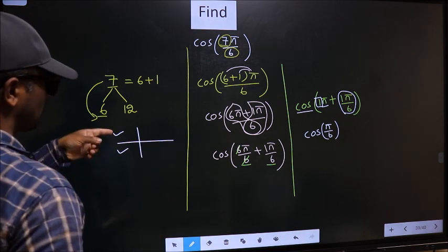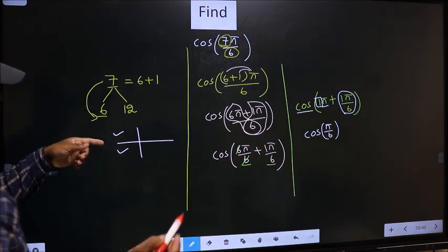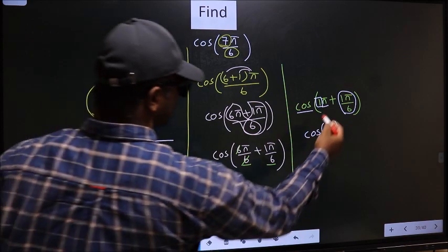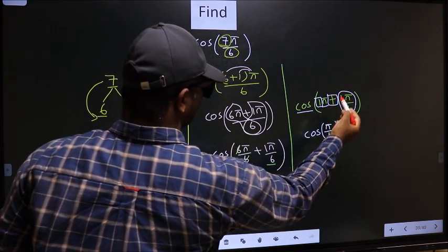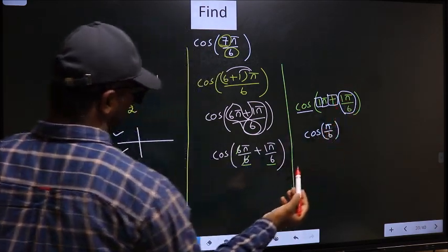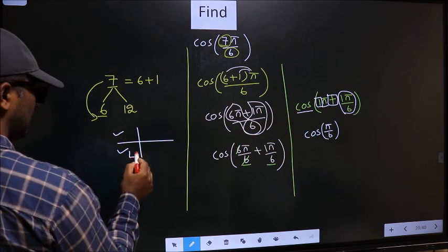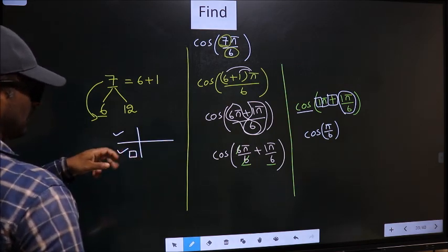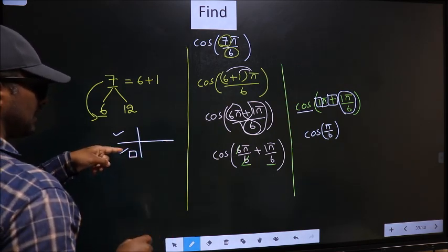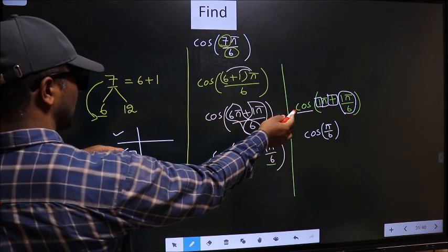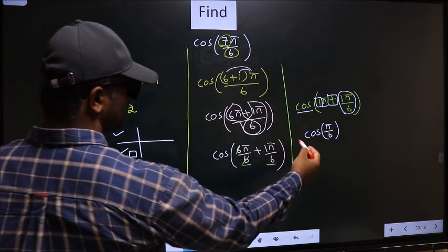Now to check in which quadrant does it lie, we should look at this symbol. Here we have plus. That means the angle lies in the 3rd quadrant. And in this quadrant, cos is negative. So you should put negative.